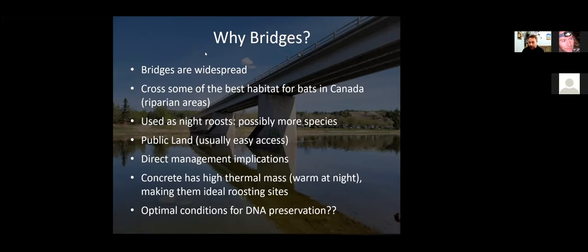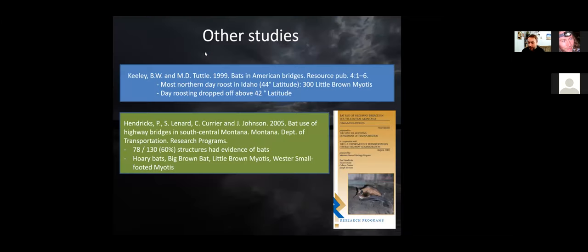Bridges are on public land, which makes accessing them very easy. From a monitoring point of view, bridges are ideal. If bridges are used by bats there are also important management implications for the timing of construction activities and noise abatement. Concrete has a high thermal mass — that's what makes it attractive for night roosting. It stays warm at night and relatively cool during the day, but if you're a bat trying to save energy, having access to a warm concrete structure might provide substantial advantage. For sampling, bridges are sheltered from rain, UV radiation, and have stable temperatures, which means the DNA in guano is less likely to degrade.